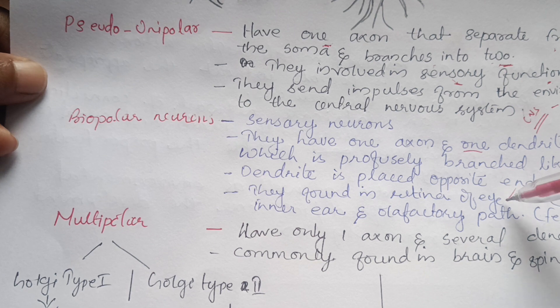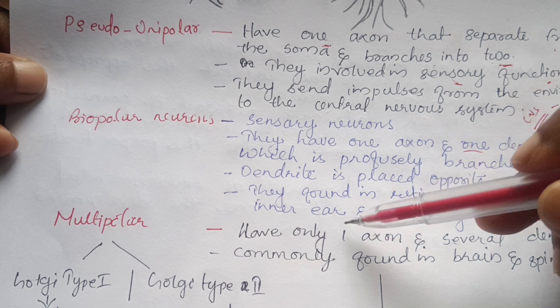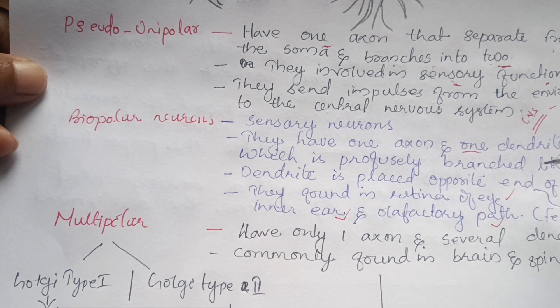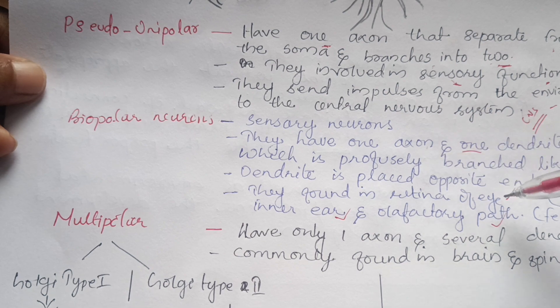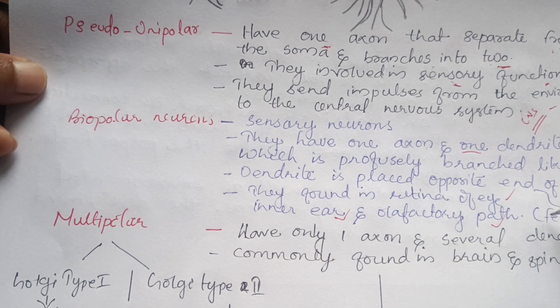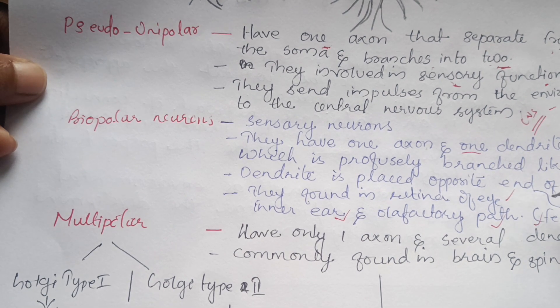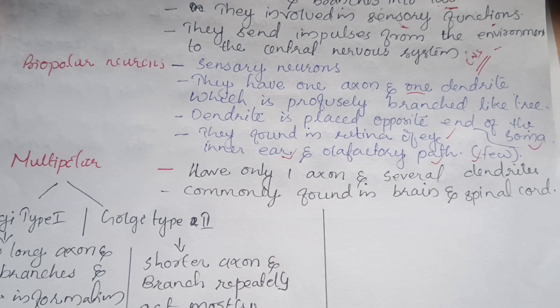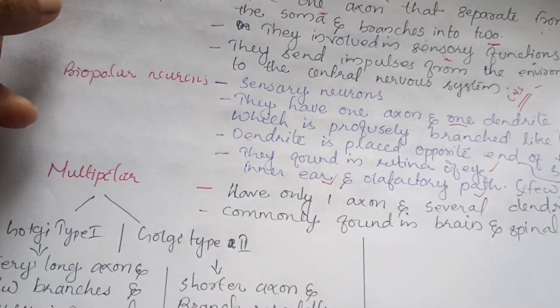Bipolar Neurons are also found in the retina of the inner ear. In the embryo, they are also present. The next type is the Multipolar Neuron.